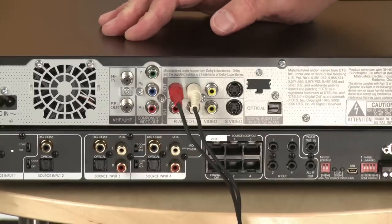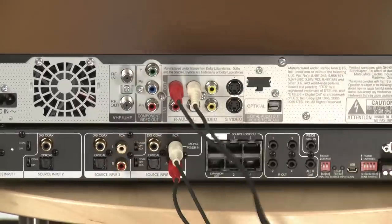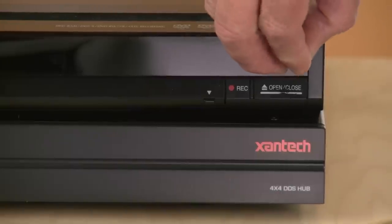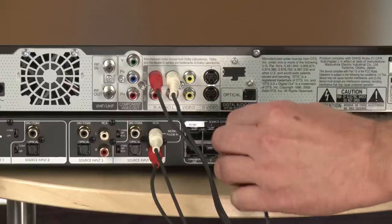Connect your sources to the hub using either the digital or analog audio inputs. Attach the IR emitters to the front of each component, plug them into the back of the hub so you can control the system by remote from each room.